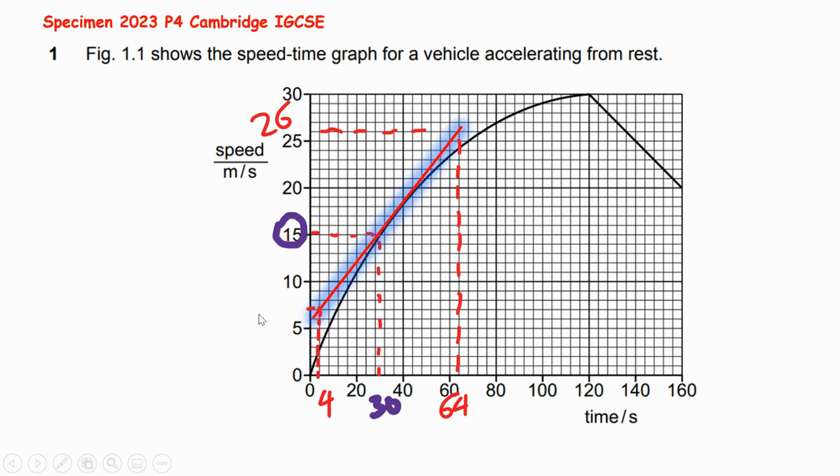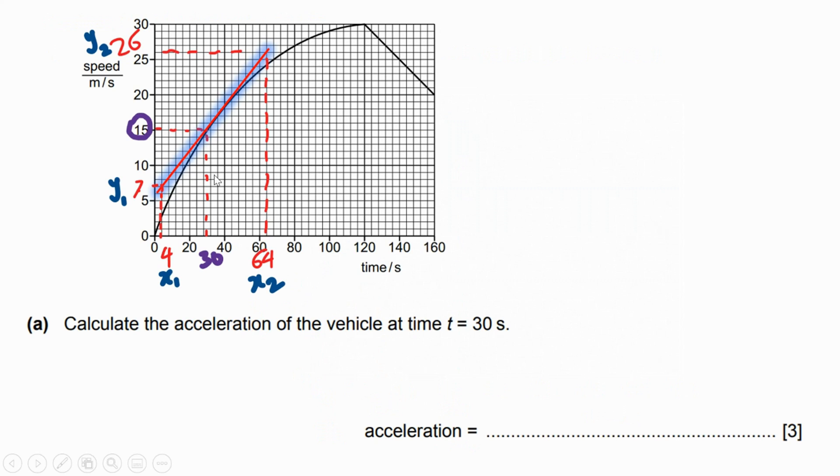The opposite one on the y-axis is seven. So this is y2 for the 26 and the value of seven is y1, and four is x1 and 64 is x2. When you calculate the gradient, go to the next slide. Part (a): calculate the acceleration. As I told you, at 30 seconds we have completed. There's y2, y1, x1, and x2. Three marks for what? Firstly, explain to the examiner why I am calculating the gradient, because the gradient here in the speed-time graph means acceleration.